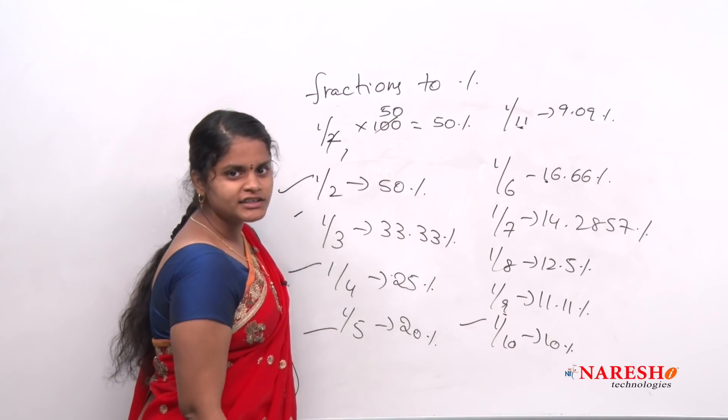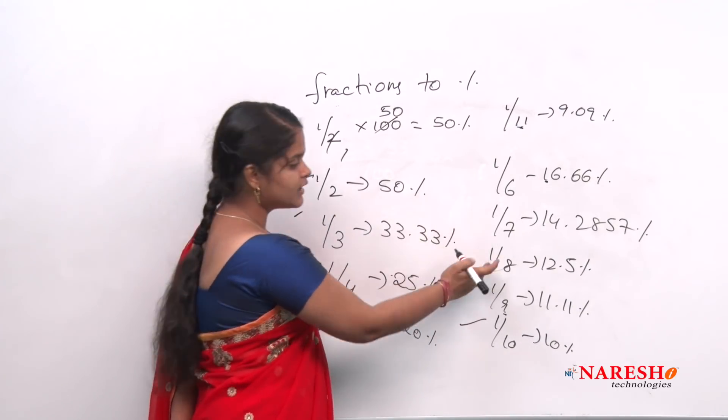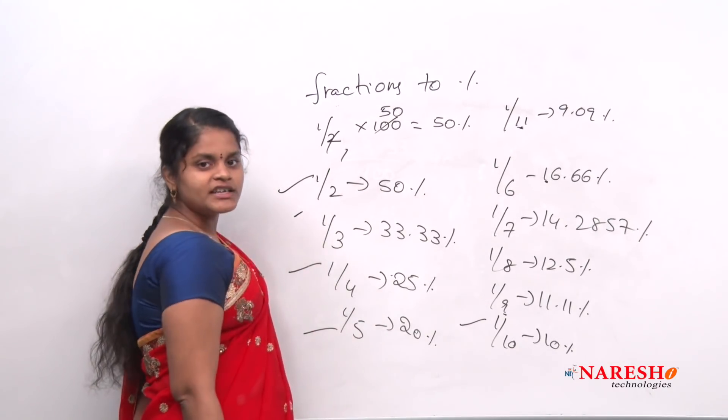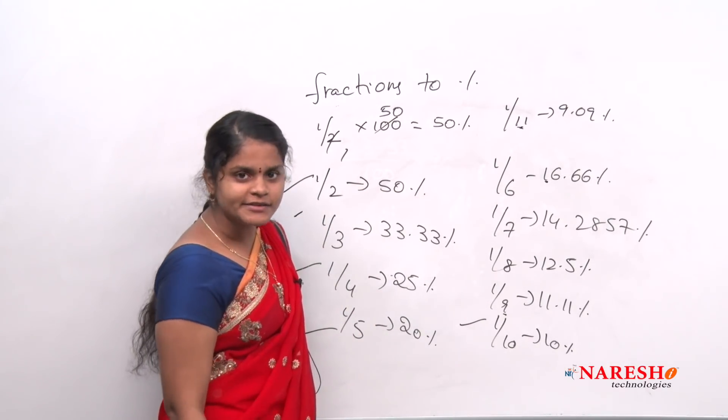So 1/7, it is a magical number. Let me say you in the last. And 1/8 is 12.5. If you remember these values, you can solve problems in a very easy manner.